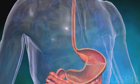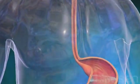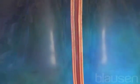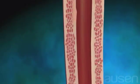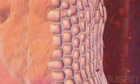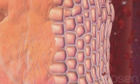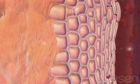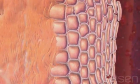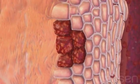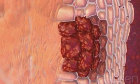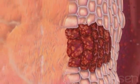There are two types of esophageal cancer: squamous cell cancer and adenocarcinoma. The lining of the esophagus is made up of flat, thin cells called squamous cells. Squamous cell cancer develops in the upper and middle part of the esophagus.